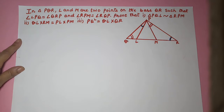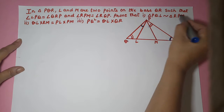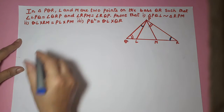Now, when are two triangles similar? When any two angles between them are equal, the third angle is automatically also the same. That means if the angles of two triangles are equal, they are similar.